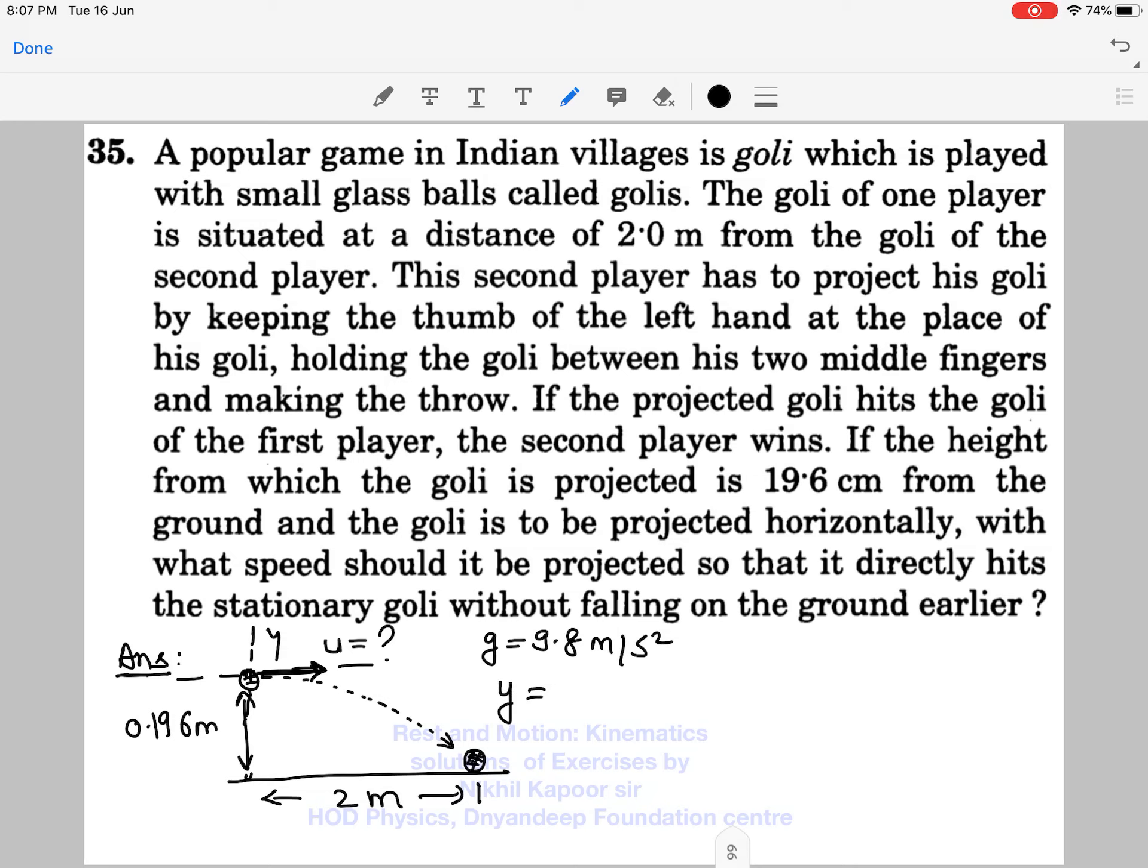At the goalie of first player, what is the y coordinate? The y coordinate of the second goalie is minus 0.196m and I will apply the equation of motion y = uy·t + ½·ay·t² by considering motion along y axis only.